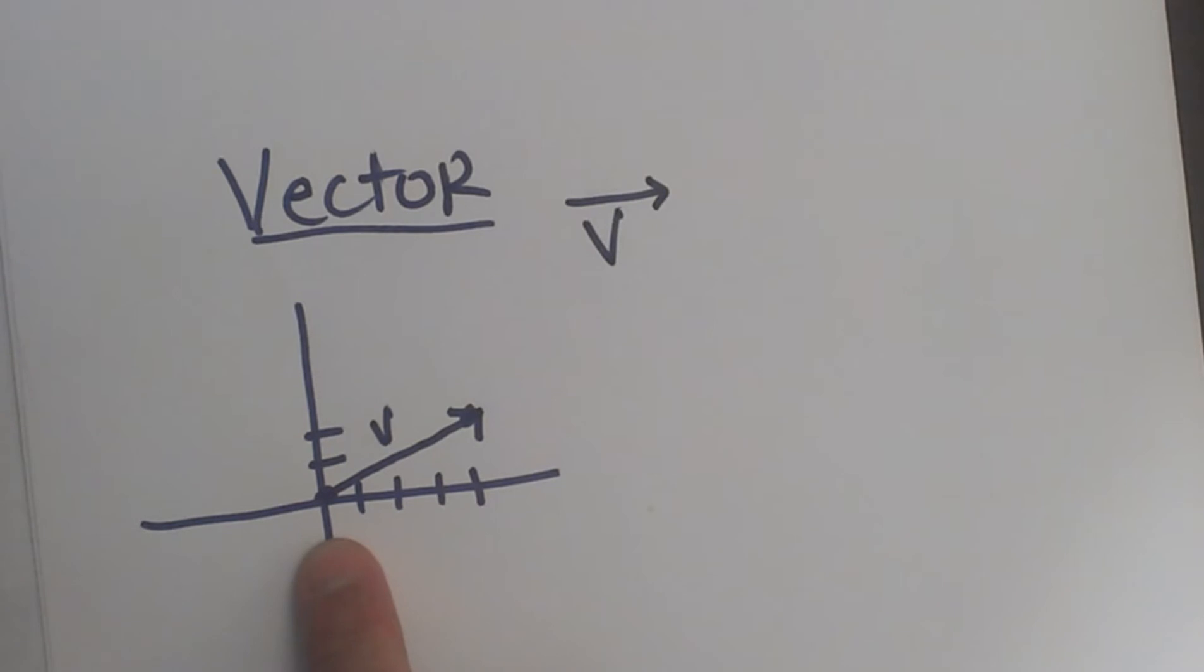A vector has a magnitude and a direction, which is kind of like a strength in a direction. So it's going to have two coordinates, just like an ordered pair.